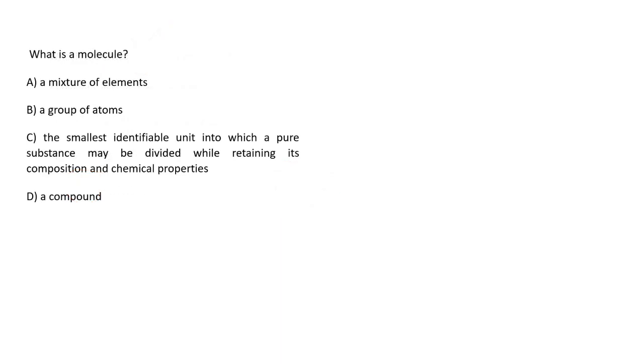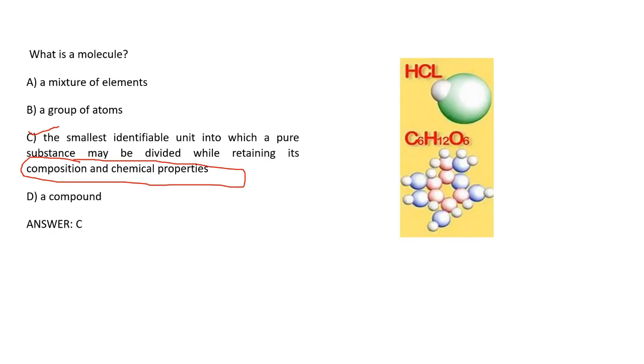What is a molecule? A molecule is when two or more atoms combine to form a single structure. That is option C: the smallest indefinite unit which is a pure substance and may be divided by retaining the composition and chemical properties. Here you can see the structure of HCl and glucose C6H12O6.